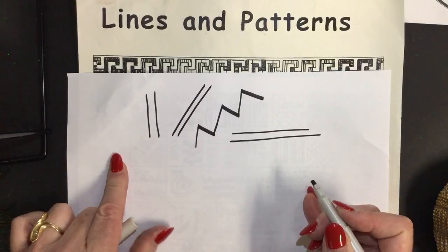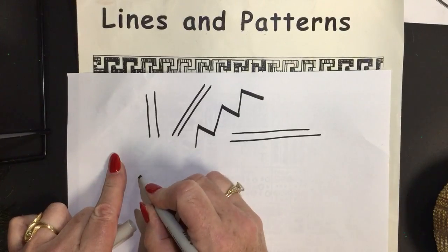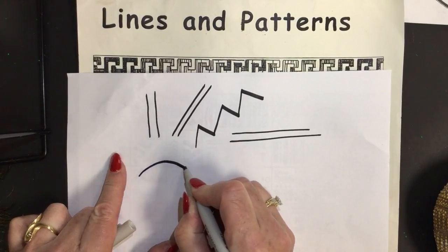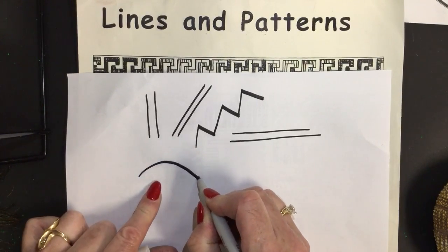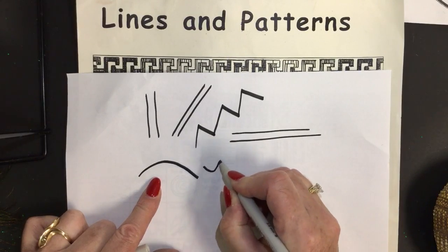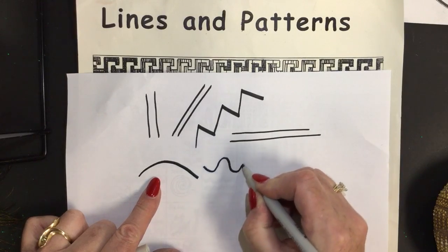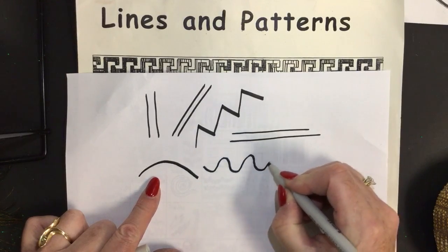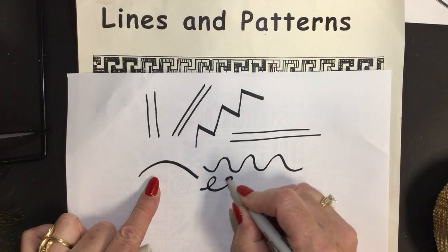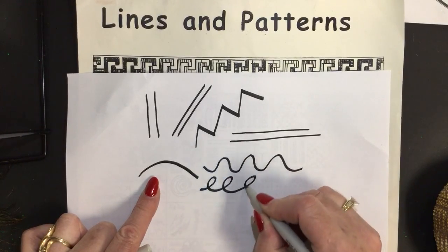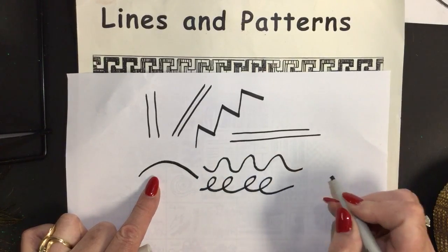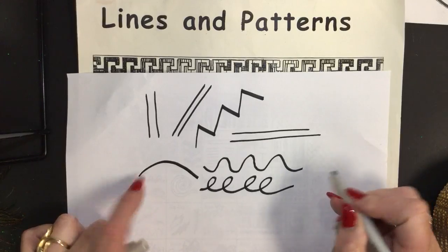These are the straight combined with curved. A curved line is a line that is not straight. It can be wavy. It can be curly. These are different ways of using lines.